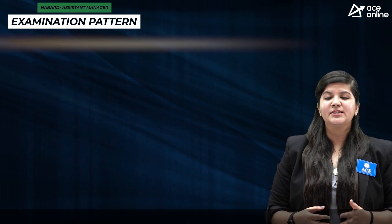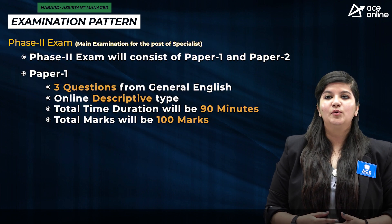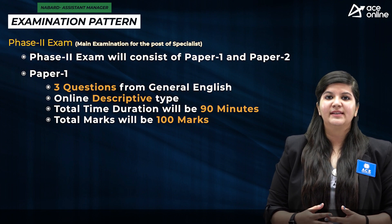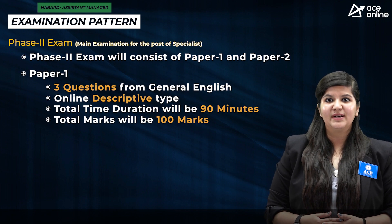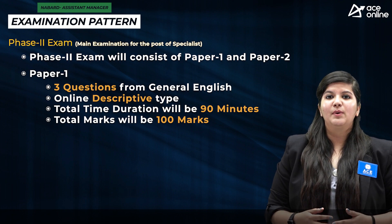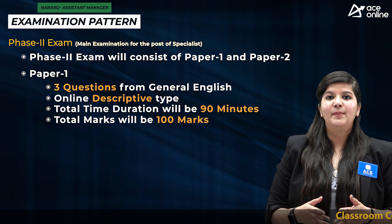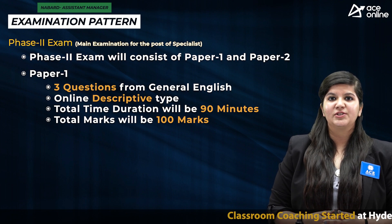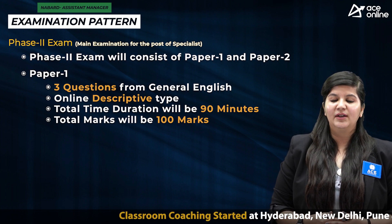Let's come to the examination pattern of the Mains examination. Candidates who qualify the pre-examination will be called to write the Mains examination, which has two papers: Paper 1 and Paper 2. In Paper 1, there will be 3 questions from General English and the paper will be descriptive type, with a total time duration of 90 minutes and total marks of 100.